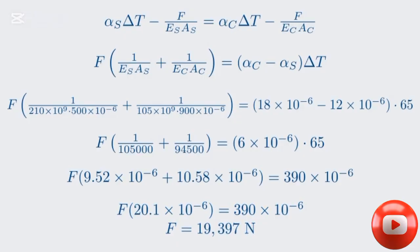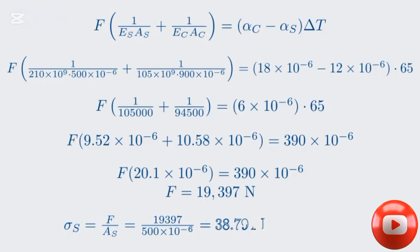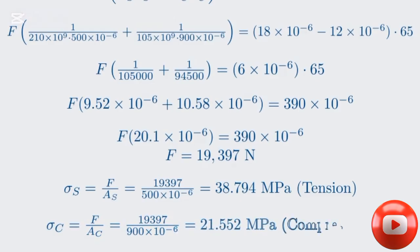Now we can find the stresses. Stress sigma equals force divided by area. For steel, the stress is 19,397 divided by 500 times 10 to the minus 6, which gives 38.794 megapascals — in tension, as predicted. For copper, the stress is 19,397 divided by 900 times 10 to the minus 6, which gives 21.552 megapascals — in compression. And there you have it for Part 2.1: we have successfully calculated the magnitude and nature of the thermal stresses.